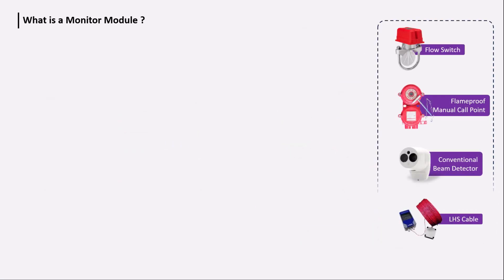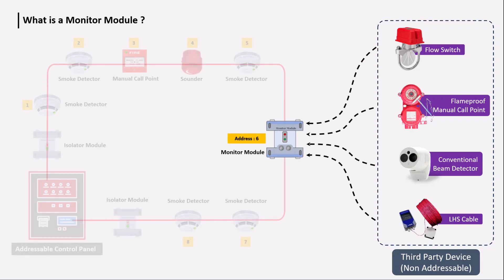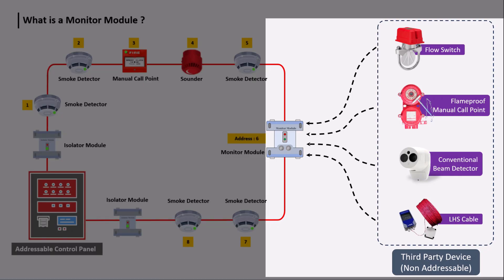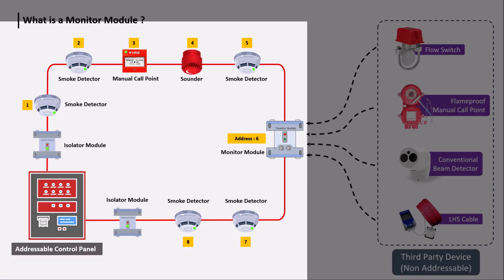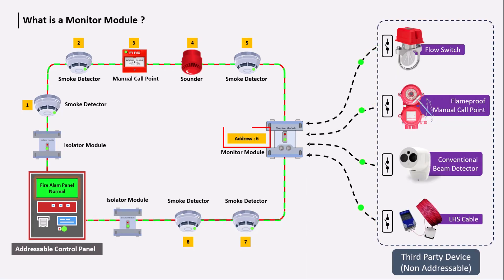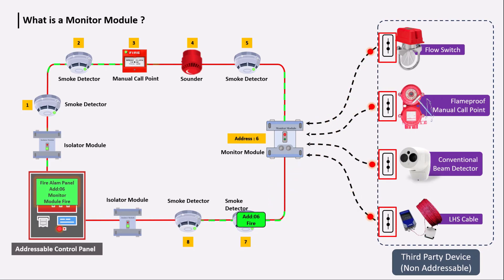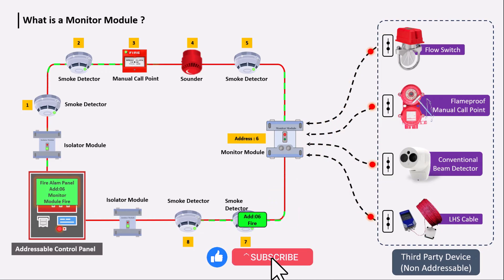Third-party devices which are non-addressable — such as flow switches, tamper switches, manual push stations, and conventional beam detectors — are connected with the monitor module, and the monitor module is connected with the addressable fire alarm panel via loop wiring. This monitor module has a unique address, meaning it monitors the status of third-party devices and reports to the fire alarm panel. If the status of the third-party device changes, the monitor module sends a signal with the address, so you get the status along with the pin location of the third-party device.